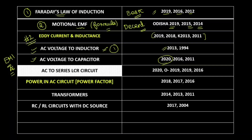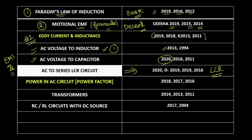Now we come to the very, very most important topic in the AC chapter — the LCR circuit, specifically the series LCR circuit. This question has been asked every year in the NEET exam. It may seem complicated, but if you understand it you can use the LCR circuit formulas; otherwise you can do a formula revision to get the idea.